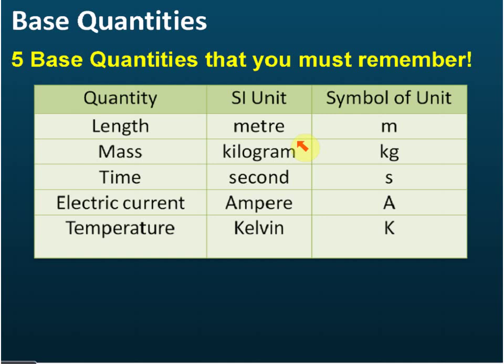In SPM, there are five base quantities that you need to know. Actually, there are seven base quantities, but in SPM you just need to know five of them: length, mass, time, electric current, and temperature.